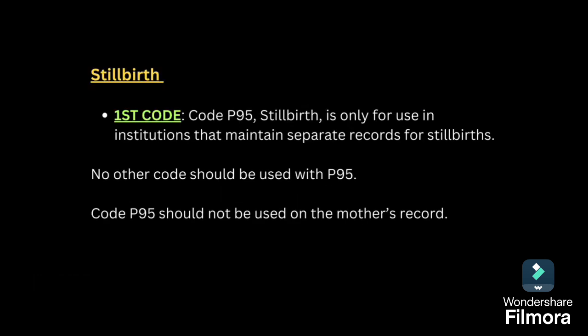The next guideline is stillbirth. Stillbirth means the baby died inside the womb, or uterus, itself. If the baby is born stillbirth, you have to code P95. No other code should be used with P95, and P95 should not be used on the mother's record.